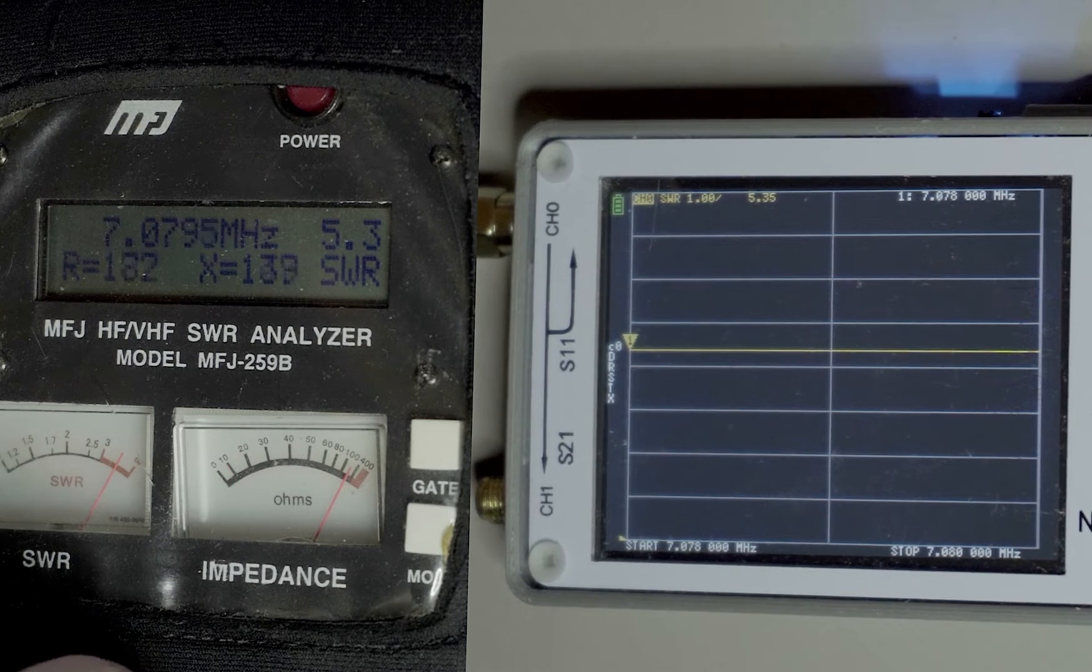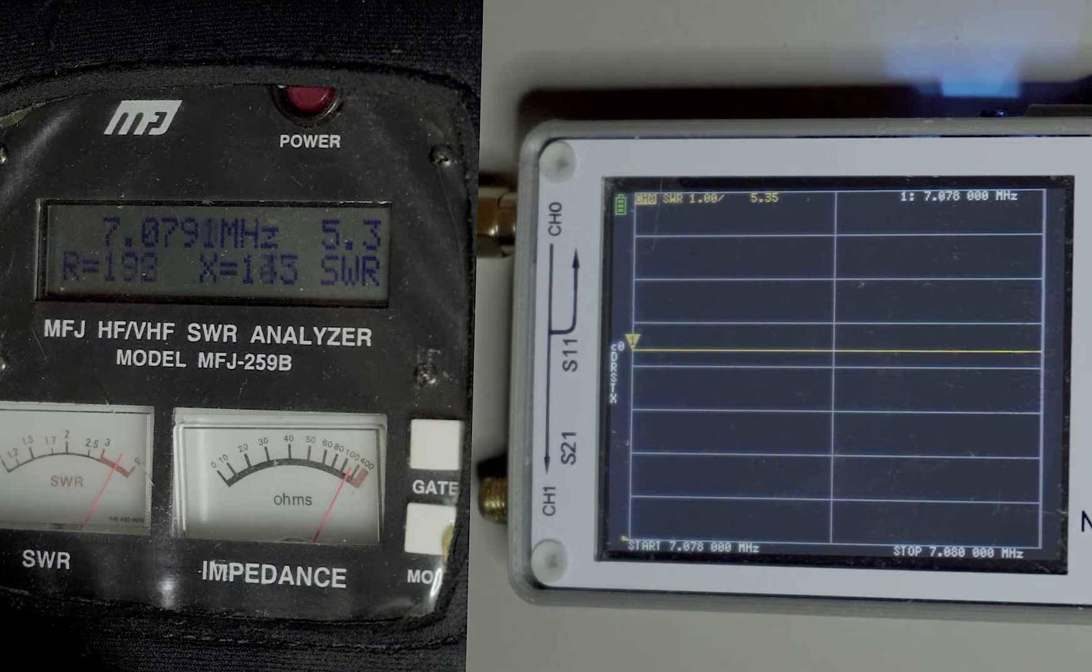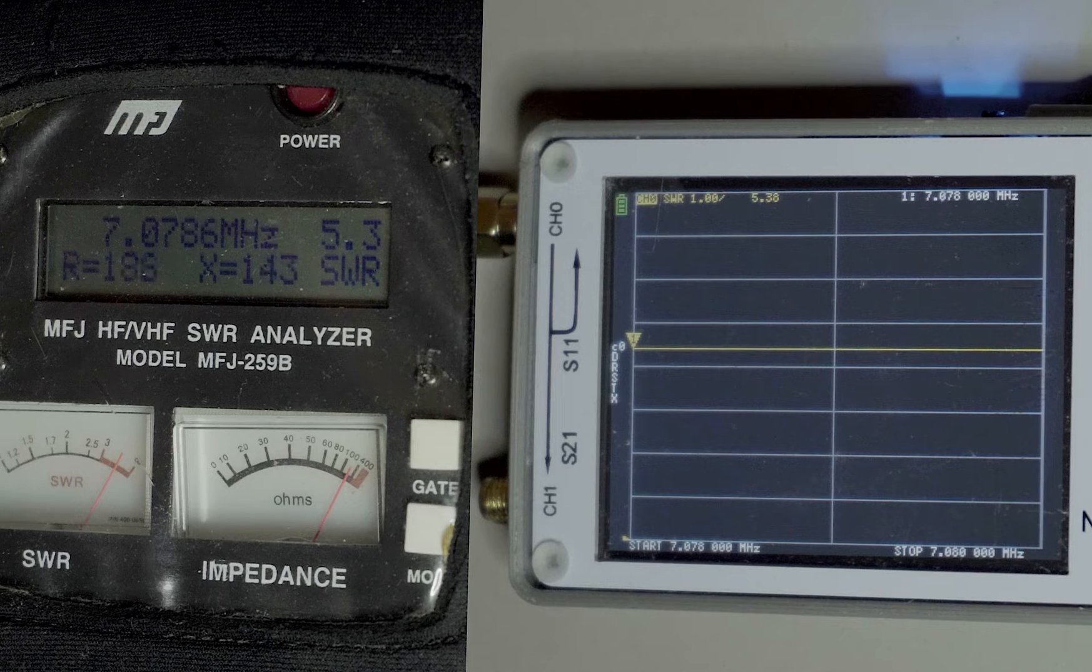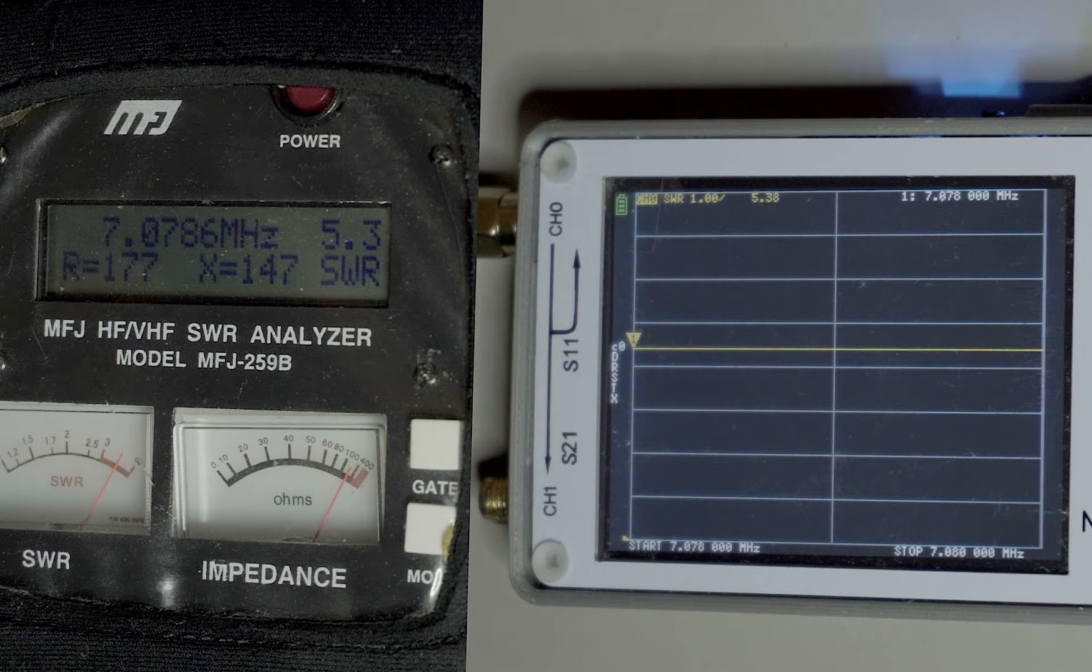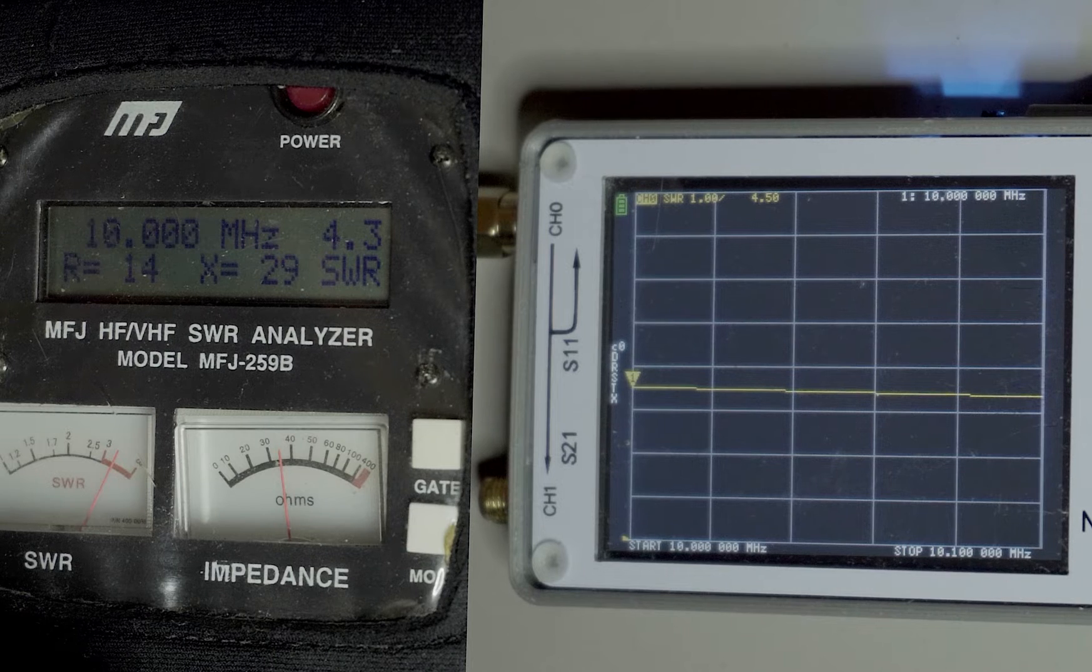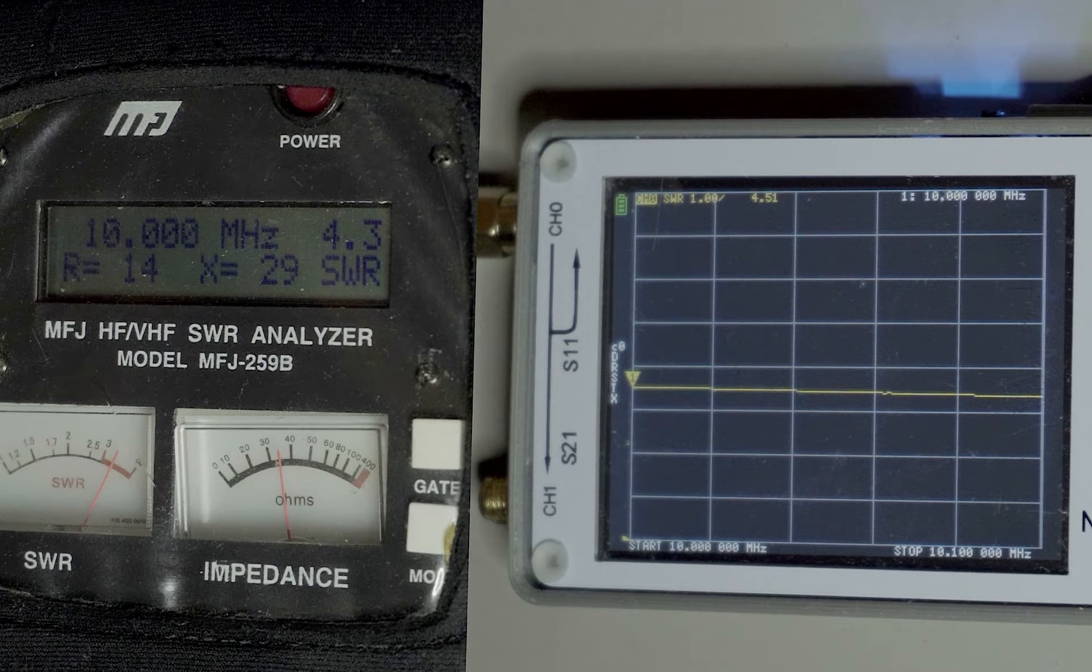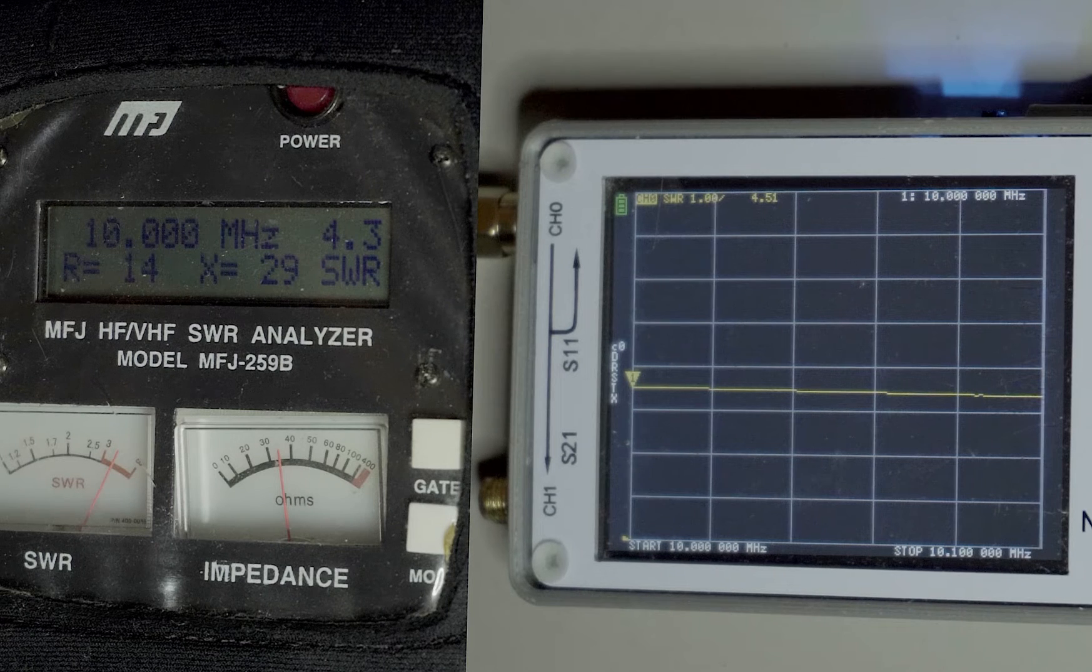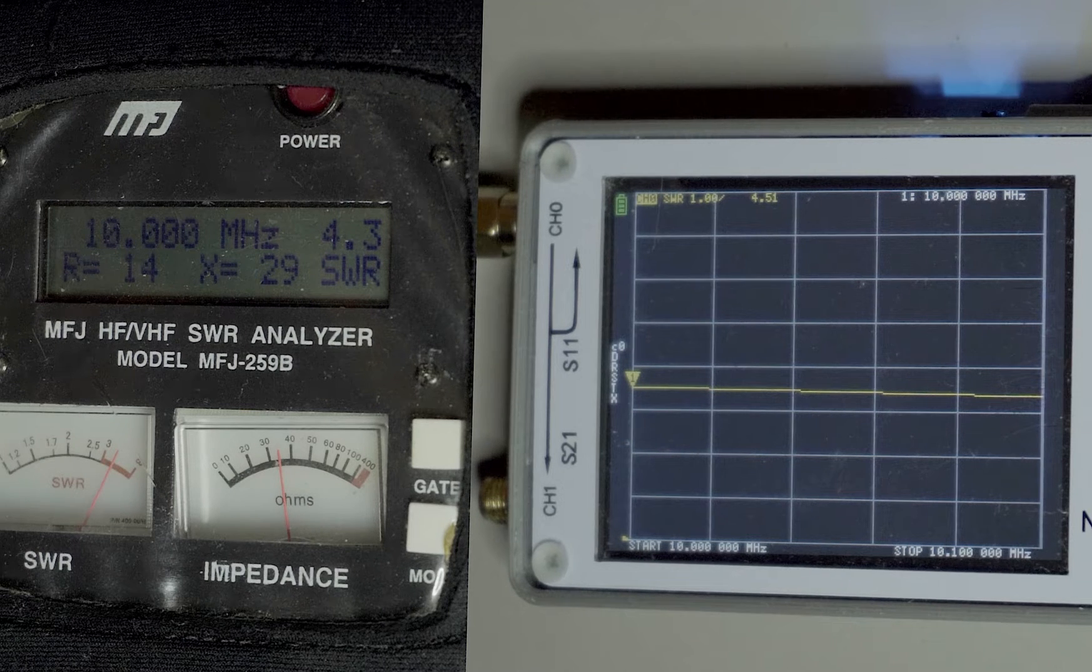Now on to 40 meters JS8, and both are agreeable at 5.3 and 5.38. Next is 10 MHz, and this is probably my favorite way to sync my clock for digital modes.